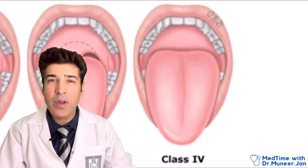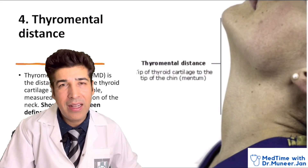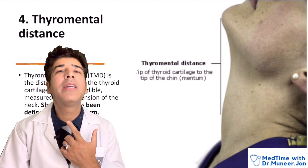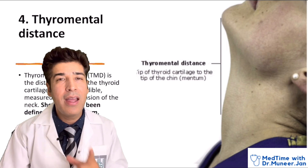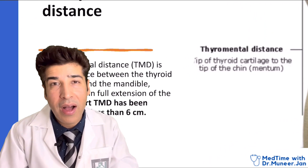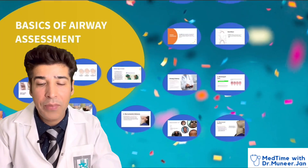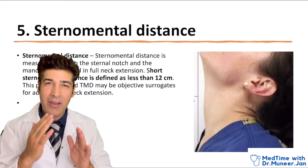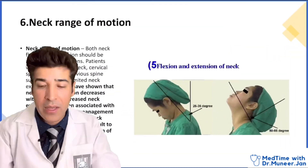Thyromental distance is very important. Tell the patient to extend the neck and measure the distance from the mentum to the thyroid cartilage. If this distance is less than six centimeters, there is a high possibility of difficult airway, mask ventilation, and intubation. Mentosternal distance is the distance between the mentum and the sternal notch; if less than 12 centimeters, high possibility of problems.